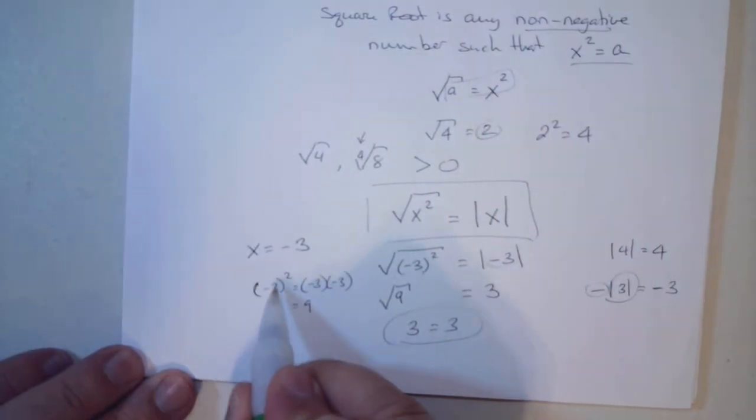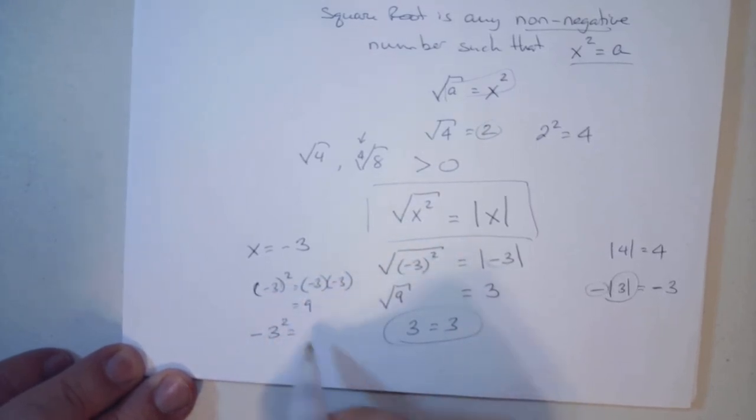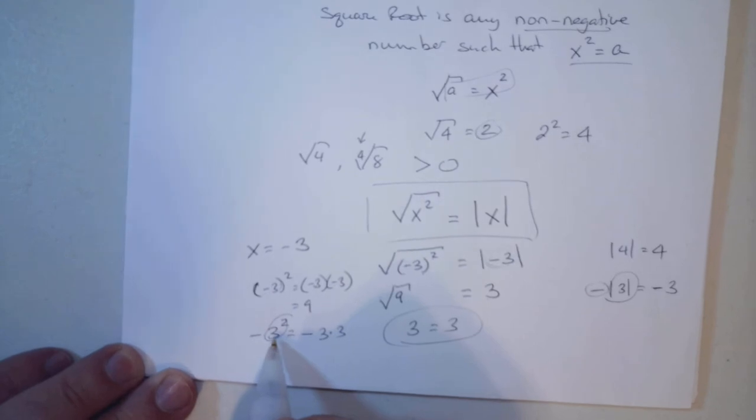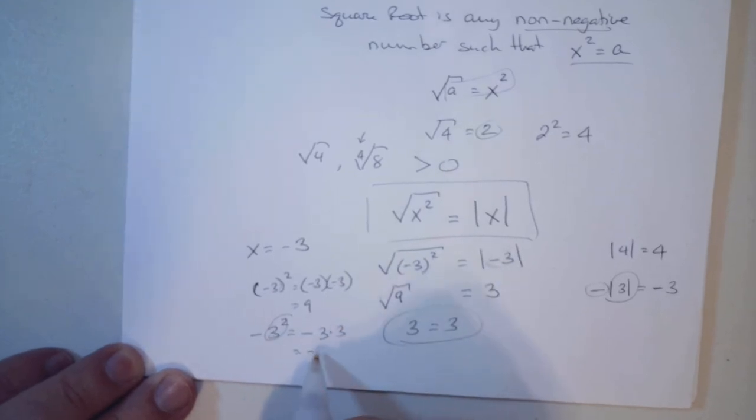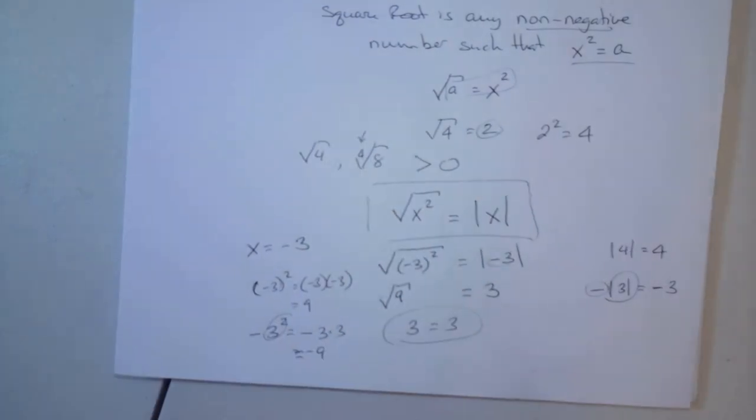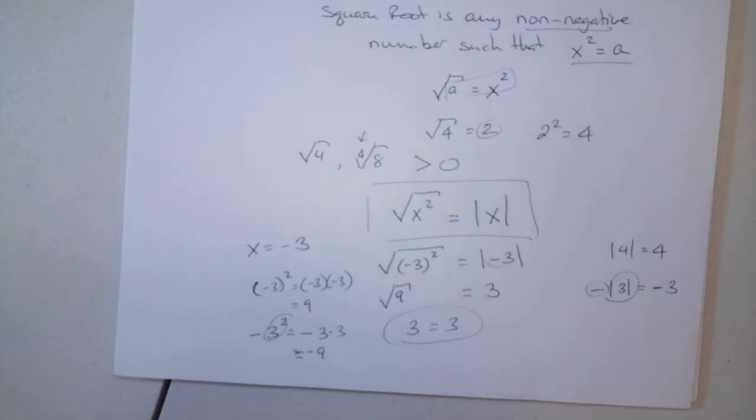Remember, as long as it's in parentheses, that negative goes with the 3. If it's outside the parentheses, then this squared only works on that 3. That would be negative 9. In case we have to be very, very careful about that.